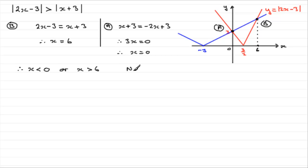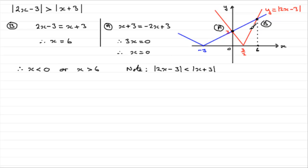It's worth noting that if we had the same question but with a less-than inequality instead of greater-than, we'd do exactly the same thing, arrive at the same intersection values, but now look for where the red graph is below the blue graph. That's this section between x equals 0 and x equals 6. So the solution would be 0 less than x less than 6.